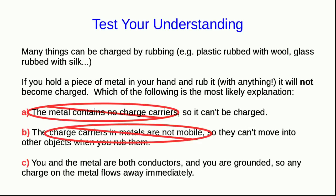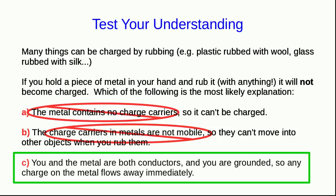But the metal is made of atoms, just like everything else, and so it's full of electrons and protons, so it's got lots of charge carriers. Answer B is claiming that the charge carriers in metals are not mobile, but that's not right. Metals are conductors, and so at least some of the charge carriers in metals must be very mobile, and so we're left with C.